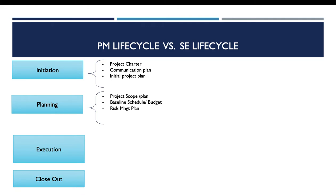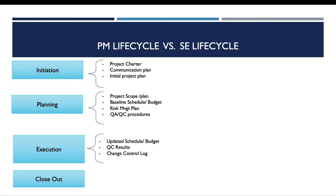The planning phase also delivers a detailed risk management plan and a quality control procedure. For the execution phase, the main deliverables are an updated schedule and budget, quality control results, and change control logs.